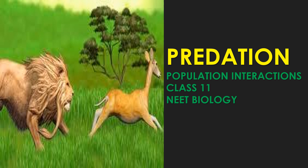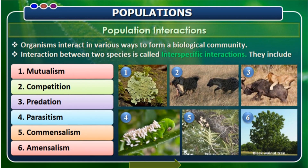Welcome to Arka's Neetobiology. Today let us discuss the population interactions which exist among organisms. Interaction is the process where one animal interacts with another. It may be of different types: mutualism, competition, predation, parasitism, commensalism, and amensalism.